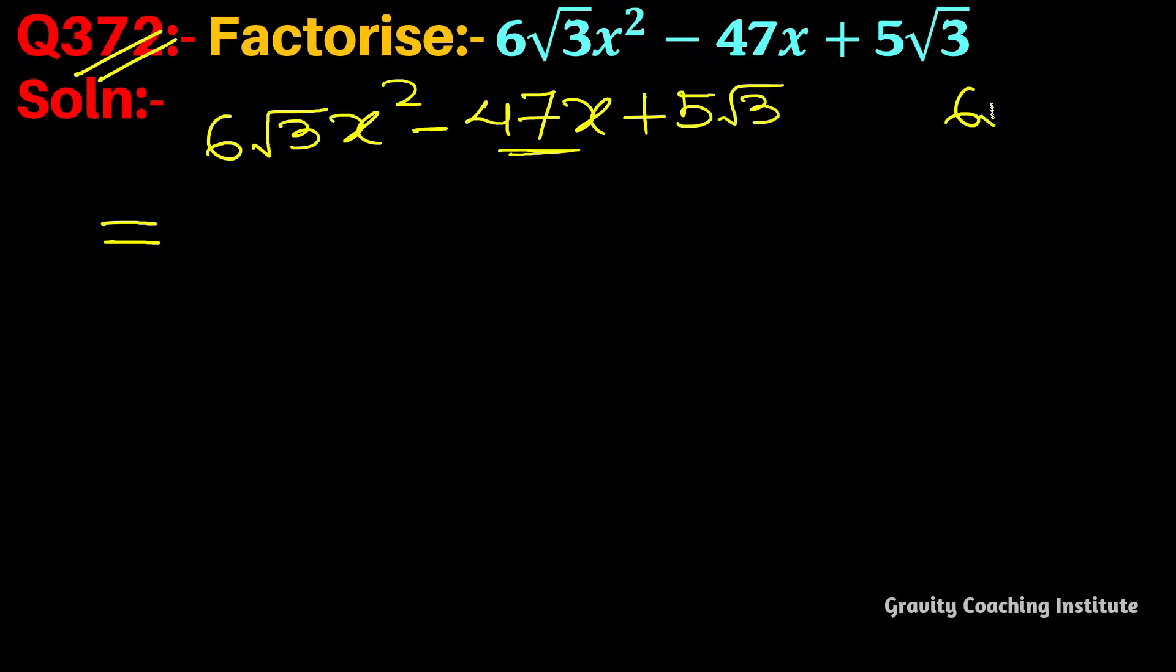The coefficient is 6√3, the constant term is 5√3, and the x coefficient is 47, which is a rational number. These two are irrational, so we will multiply this case.